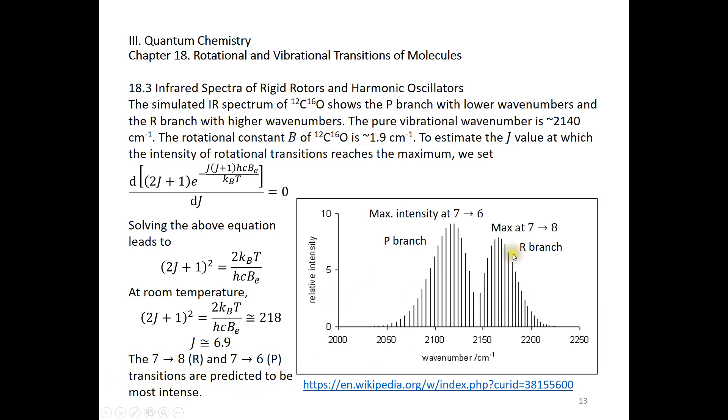And those transitions are the most intense transitions. Now let's look at the spectrum. And indeed, we have the maximum intensity that corresponds to the 7 to 6 rotational de-excitation. And also over here, it's maxed at from 7 to 8. The starting point is J equals 7, only because we have more carbon monoxide molecules in this rotational energy level of J equals 7 than any other rotational energy levels.